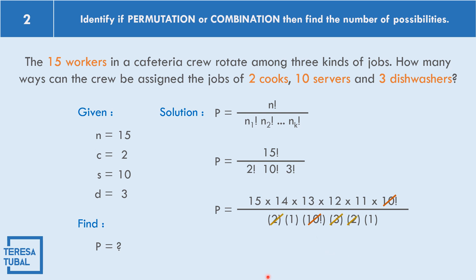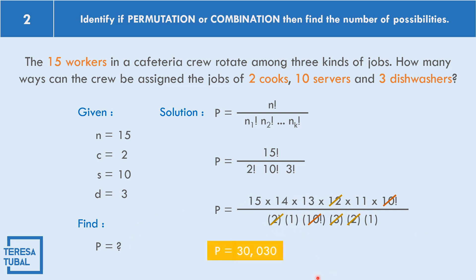We can also cancel: two times three times two equals twelve, and twelve appears in the numerator, so we cancel twelve. Multiplying the remaining numerator — fifteen times fourteen times thirteen times eleven divided by one — the answer is equal to 30,030 ways can the crew be assigned the jobs of two cooks, ten servers, and three dishwashers.